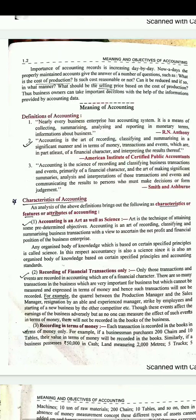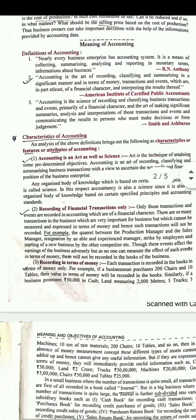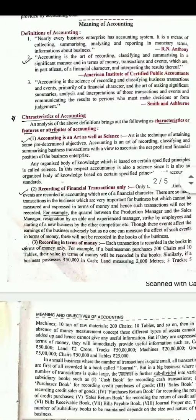Accounting के seven features आएंगे। First feature है: accounting is an art as well as science — accounting art और science दोनों है। Art इसलिए क्योंकि इसमें theoretical knowledge को practically भी apply करते हैं। Science इसलिए क्योंकि इसमें systematic body of knowledge होती है, कुछ certain principles होते हैं — accounting में भी general laws, rules या principles होते हैं जो worldwide accept किये जाते हैं।